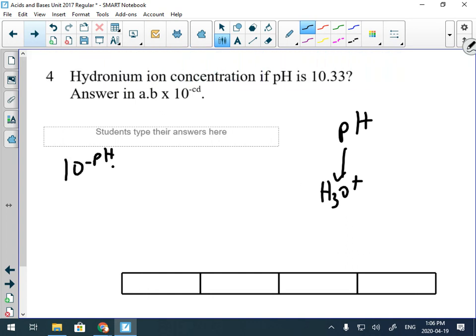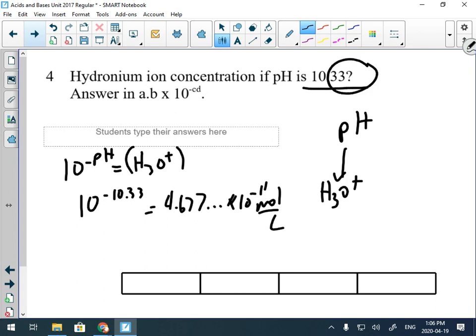Inverse log of pH is equal to H3O+ concentration. Inverse log of 10.33—second function log, negative 10.33. I get 4.677 dot dot dot times 10 to the minus 11 moles per liter. Now, what's my sig figs here? Because this is pH, remember we only count the digits after the decimal. And because this is concentration, we count the digits before the decimal. So rounding this to proper sig figs is 4.7 times 10 to the minus 11 moles per liter.